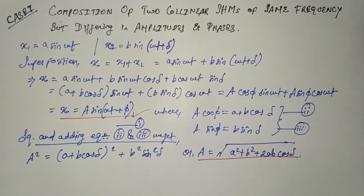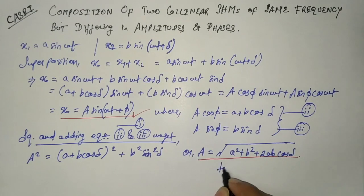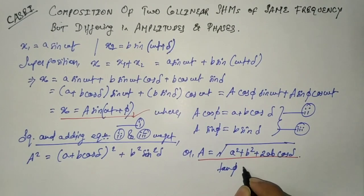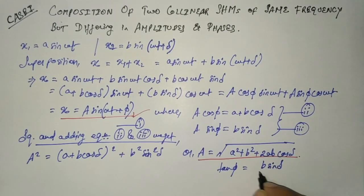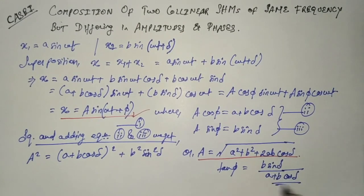To find φ, the first equation can be divided by the second. We get tan(φ) = b sin(δ) / (a + b cos δ), from which we can determine the value of φ.